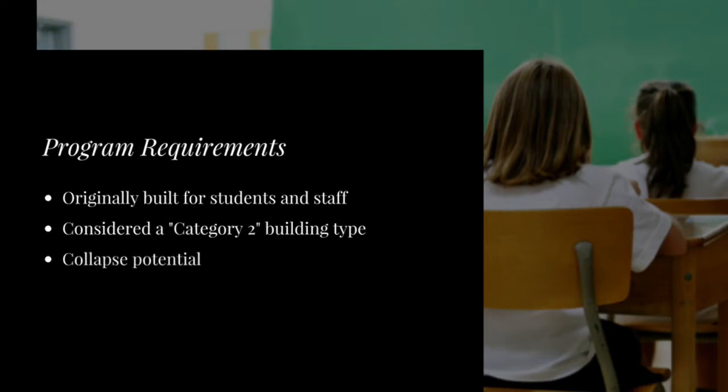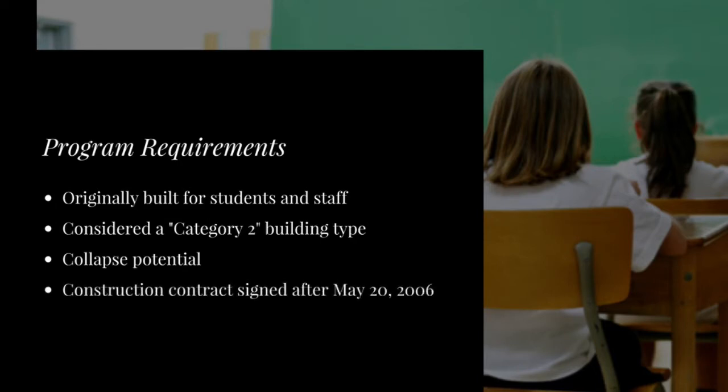The next requirement is that there's potential for the building to collapse during a seismic event. This could include ground shaking, faulting, liquefaction, or landslide events. The last qualifying criteria is that if construction for the facility has already begun or been completed, the construction contract has to have been executed on or after May 20th of 2006, which relates to the inception of the program.